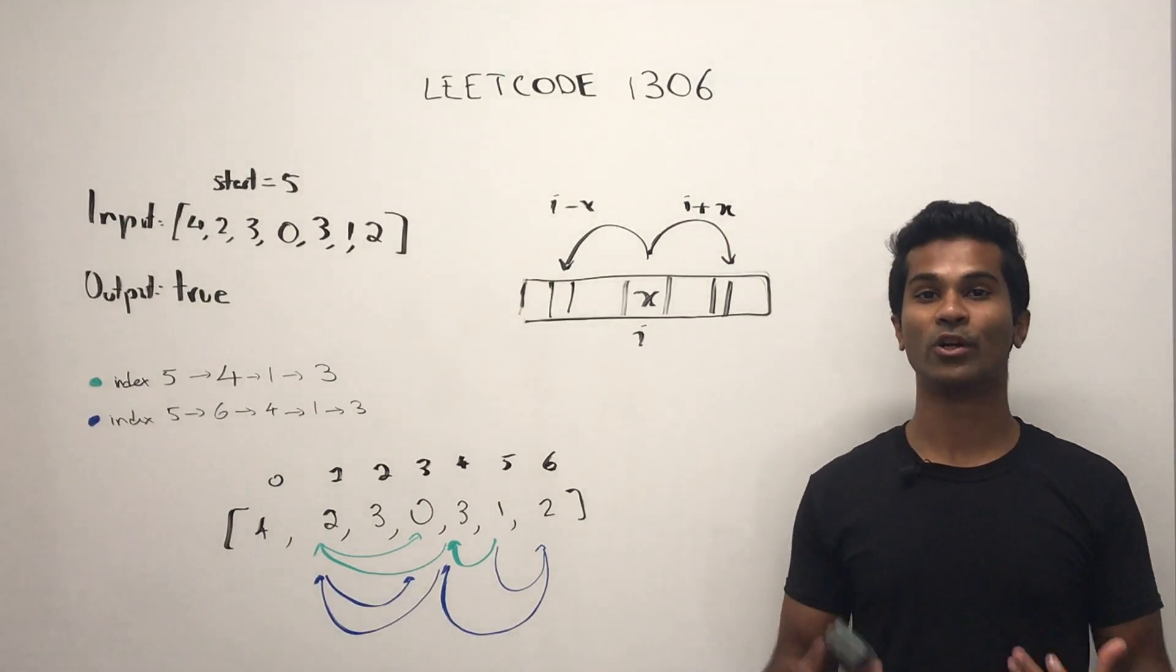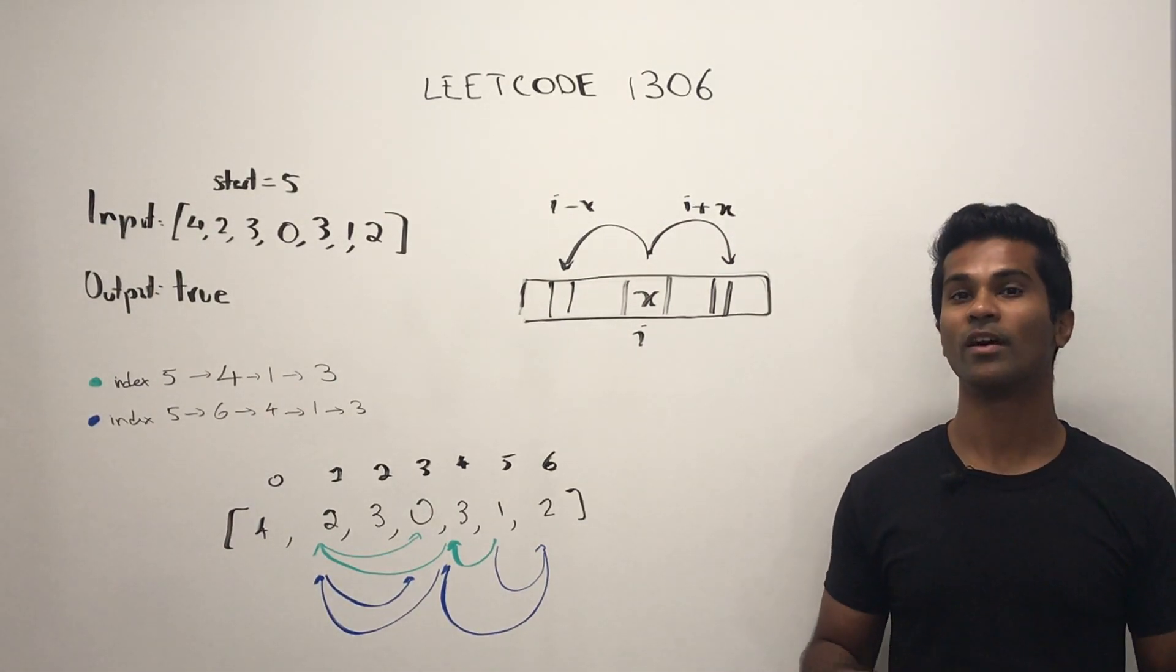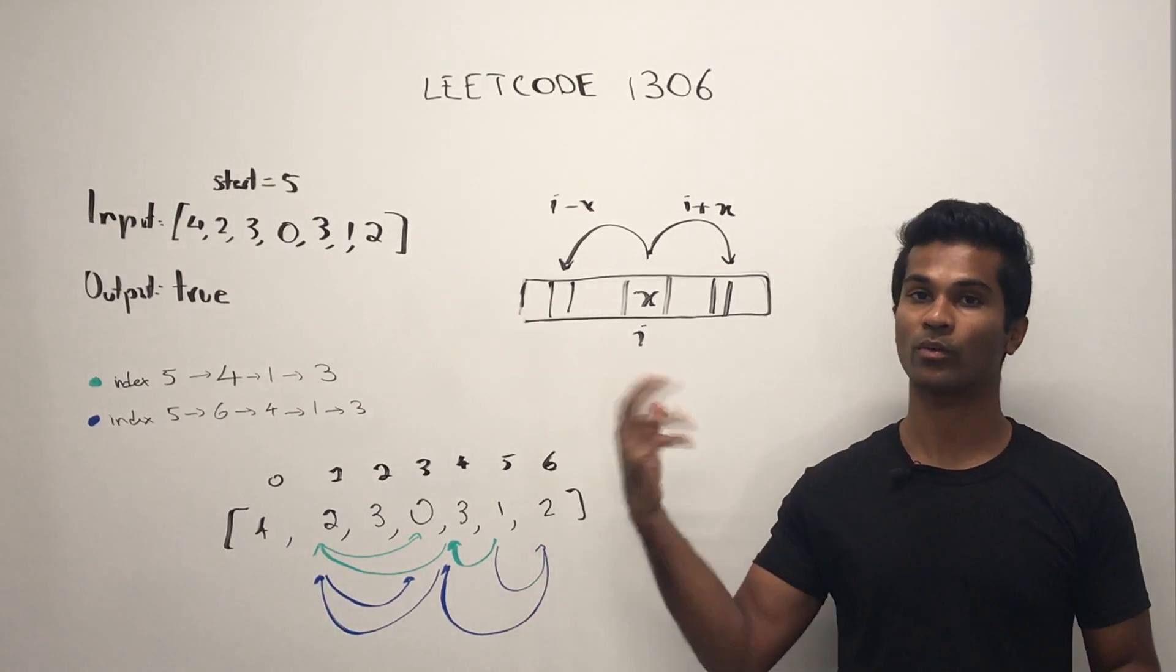As you can see, a jump is defined as a movement from index i either x spots to the left or x spots to the right.